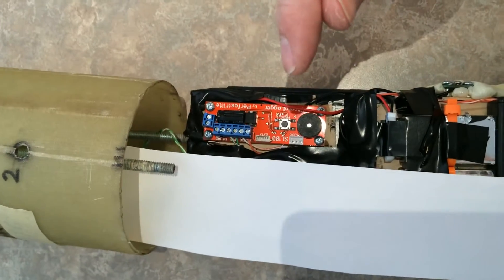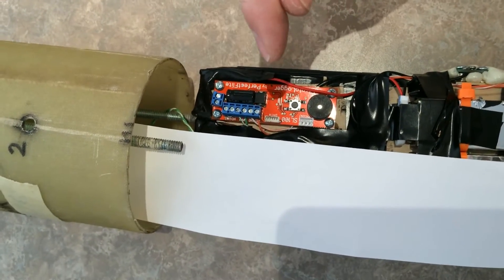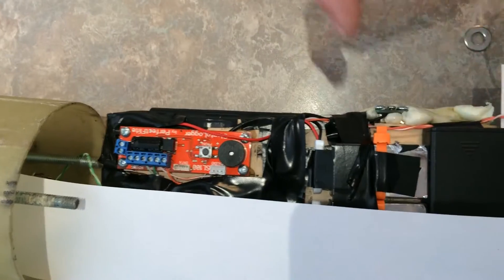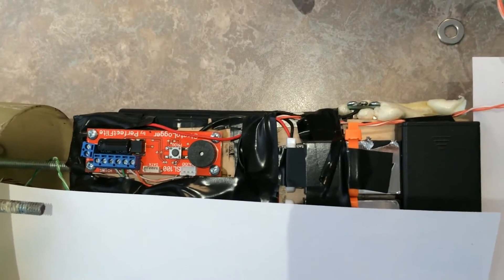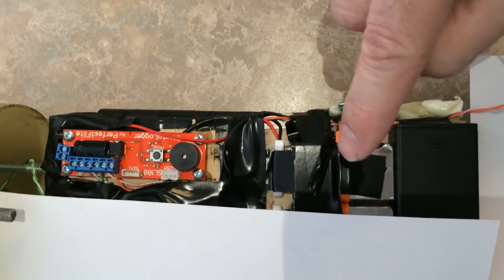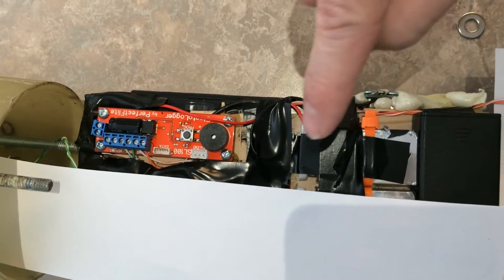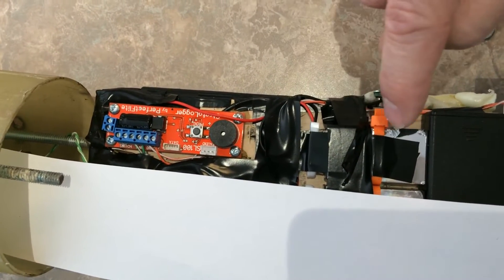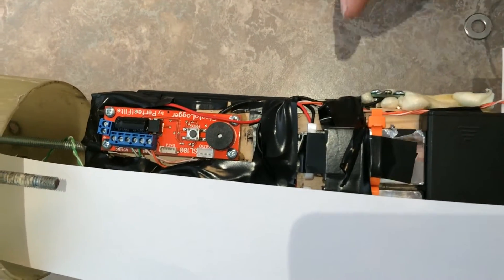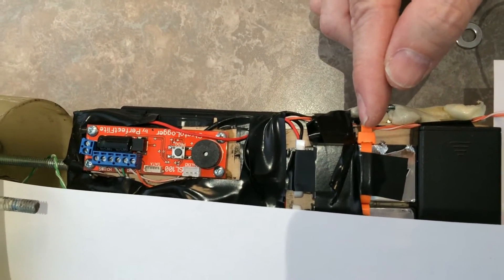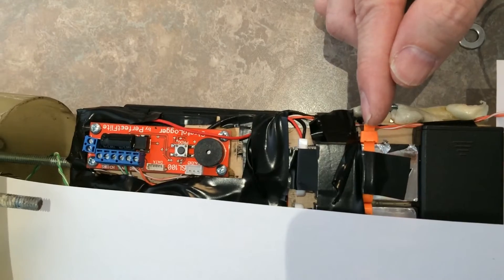So this is the Stratologger. You've seen the wires. The last part of the circuit is your battery supply—in this case a 9 volt battery. I tape it in very securely for flight. This zip tie further secures that battery down.